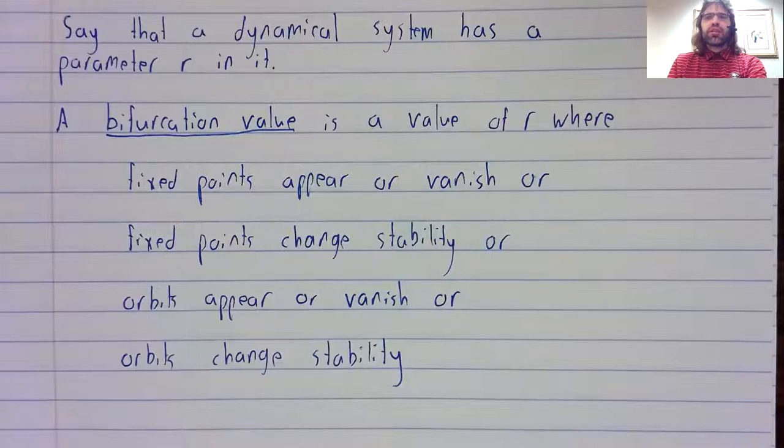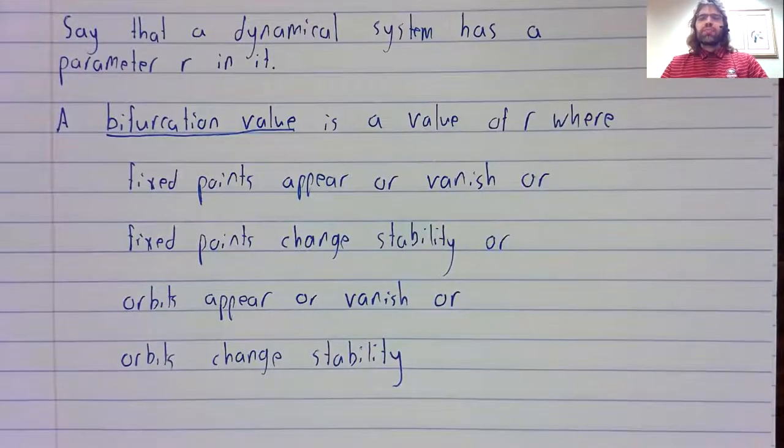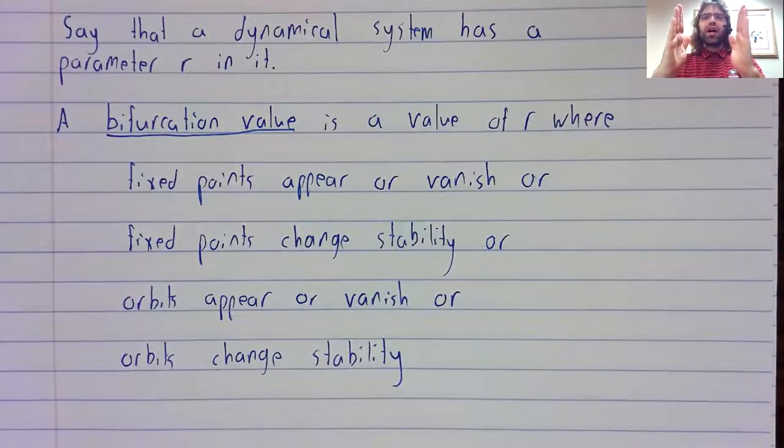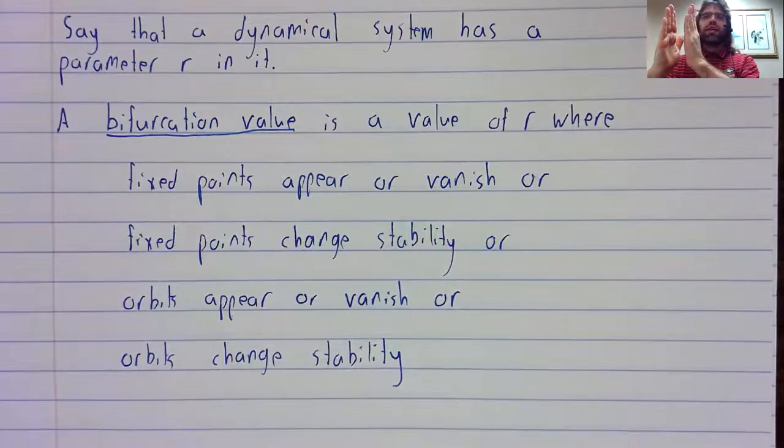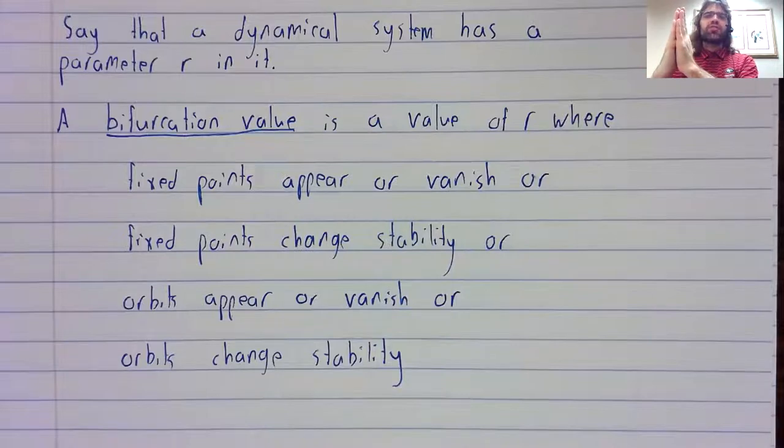Looking at the logistic model, there is, for example, a bifurcation value at R equals one. Because when R is between zero and one, we have two fixed points. As R increases, our fixed points get closer and closer together. And when R equals one, suddenly, instead of two fixed points, we have one fixed point.